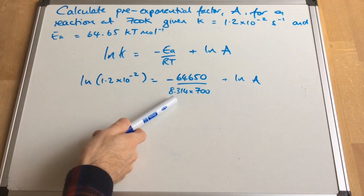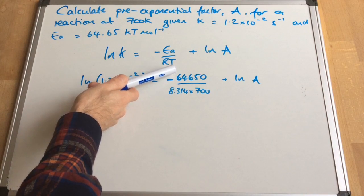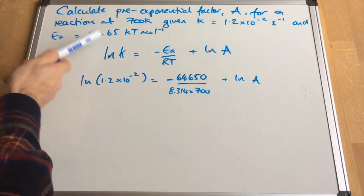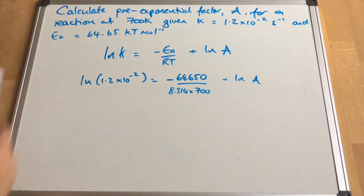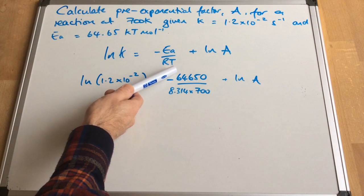The activation energy has been given in its typical units of kilojoules per mole. But in the Arrhenius equation, because we've got joules within the R, the gas constant unit, we've got to put this into joules per mole. So they've been nice giving us the temperature in Kelvin, but there's the little catch there with the units. So there's that activation energy in joules per mole.